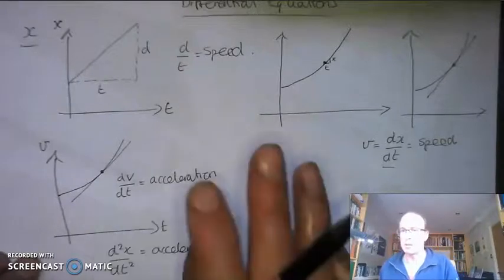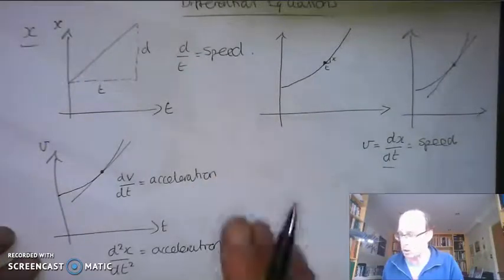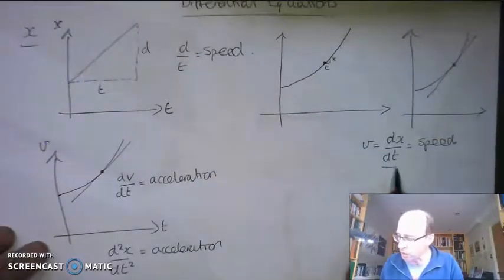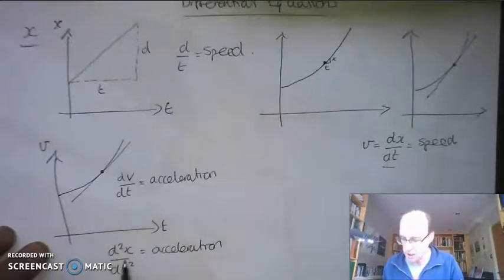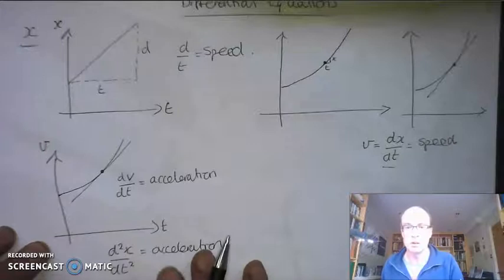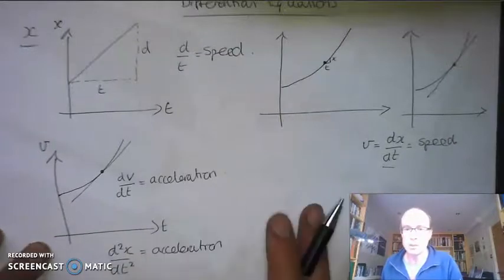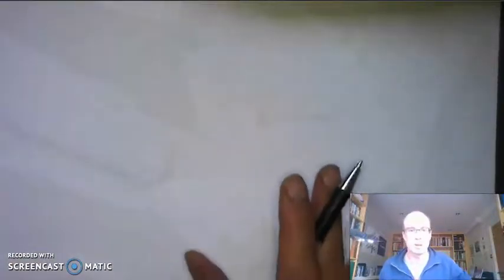Sometimes some of those equations could be quite simple. As soon as you've got one of these — either dx by dt, dv by dt, or d²x by dt² — you've got what's known as a differential equation. Sometimes they can be quite simple, sometimes they can be quite tricky.